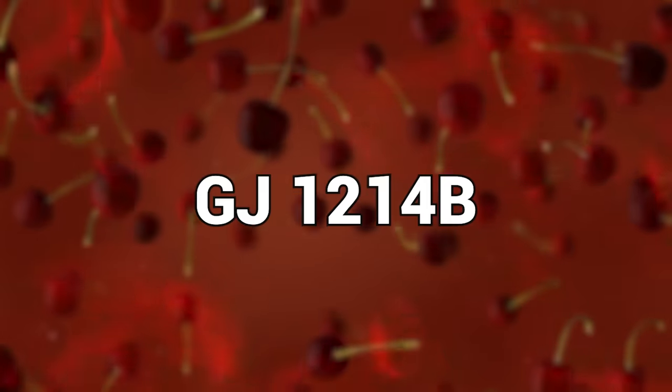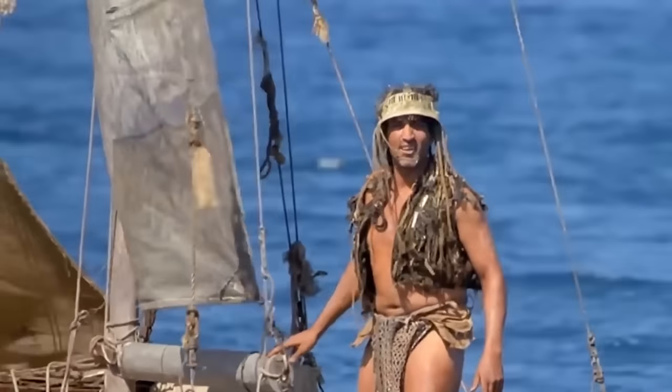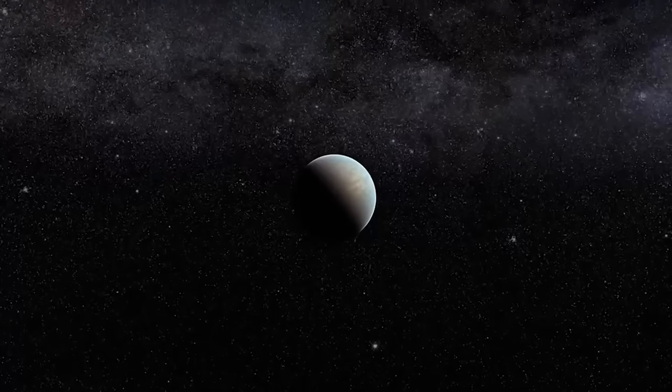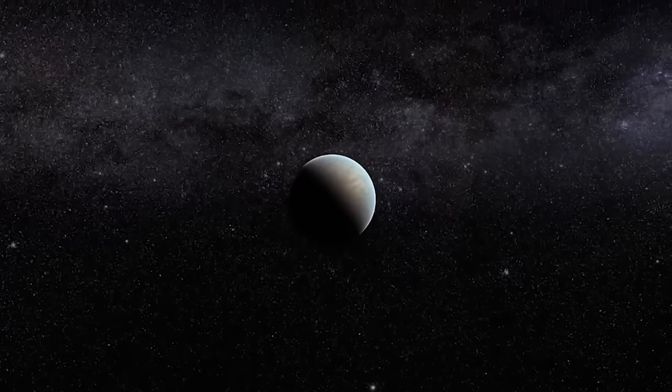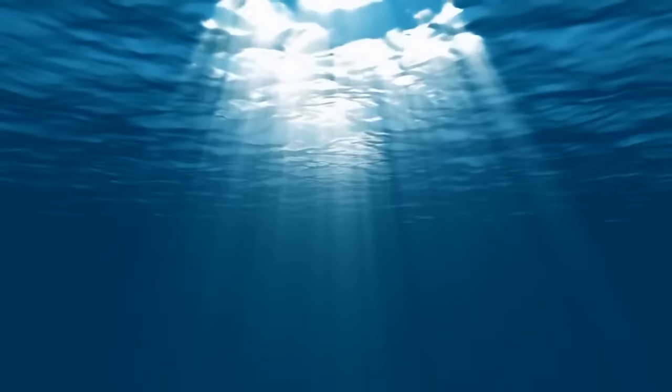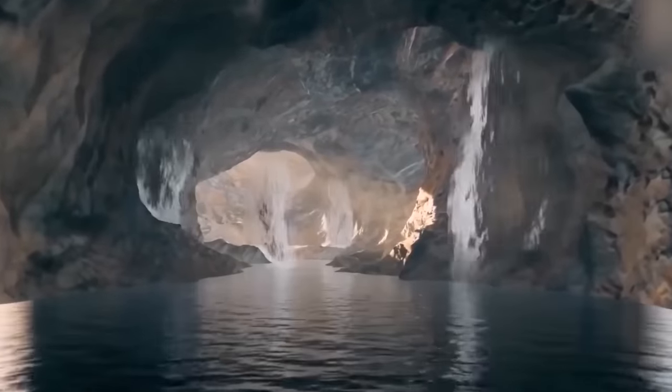GJ-1214B - Have you ever seen that Kevin Costner movie Waterworld? GJ-1214B is believed to be a planet that's completely consumed by oceans. There's no land masses to speak of, only water. The planet is said to be over twice the size of Earth and seven times as heavy, meaning that water makes up a lot of the mass for the planet.